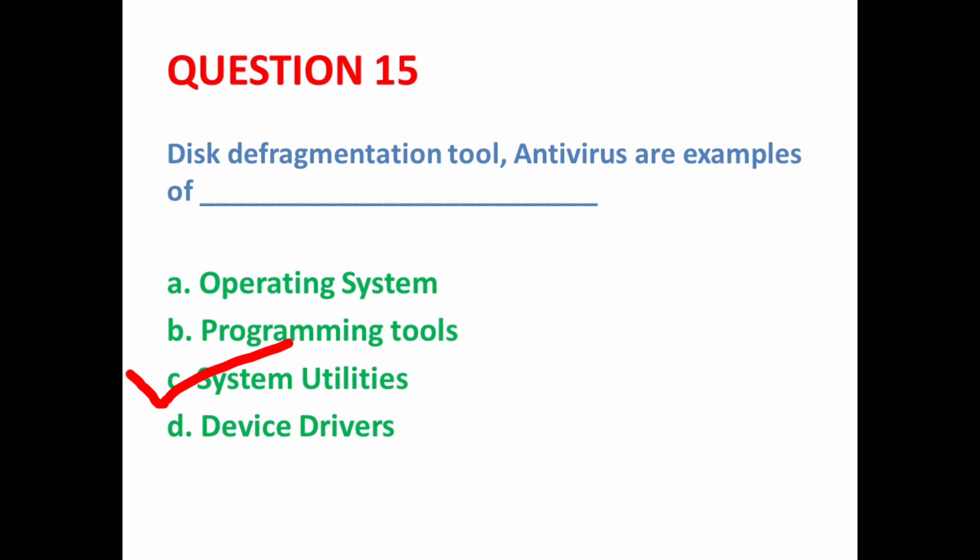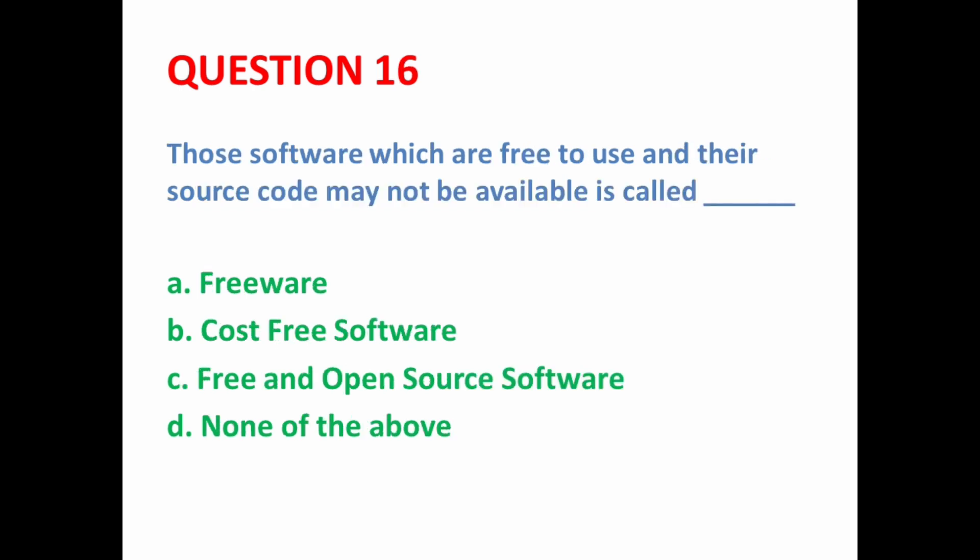Next MCQ: Software which is free to use and whose source code may not be available is called freeware. Freeware is free to use but the source code may not be available. So here option A is the correct option.